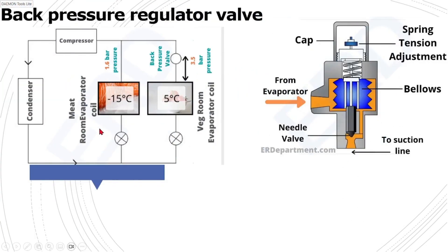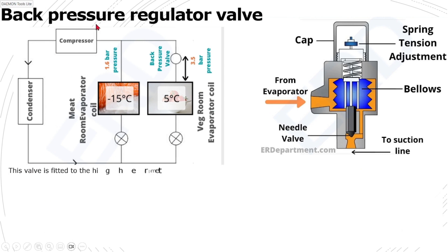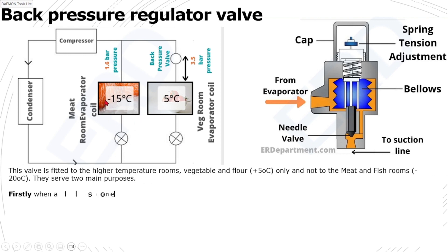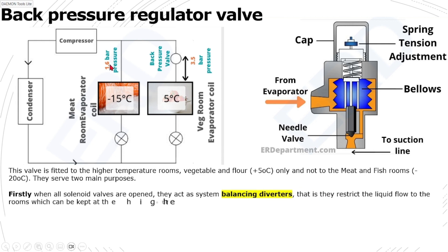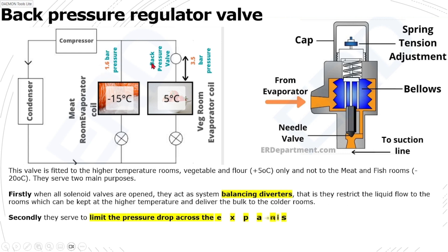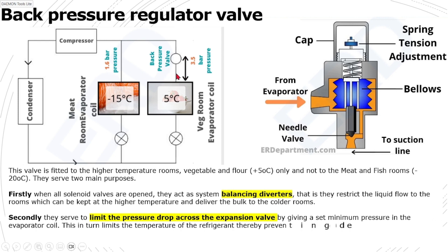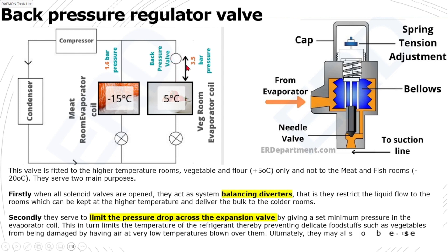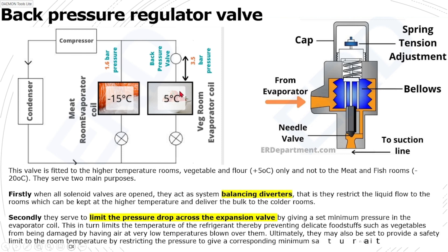Here is how it works in practice. This is the compressor, the condenser, and the expansion valve. In this particular example, you have a meat room to maintain at minus 15 degrees and a vegetable room to maintain at 5 degrees. Normally, the meat room evaporator runs at 1.6 bar. If the back pressure valve is not in place, the vegetable room evaporator would also be subjected to the same 1.6 bar. But with the back pressure valve placed after the evaporator, the pressure at the vegetable room evaporator is held at a higher value — in this example, 3.5 bar.